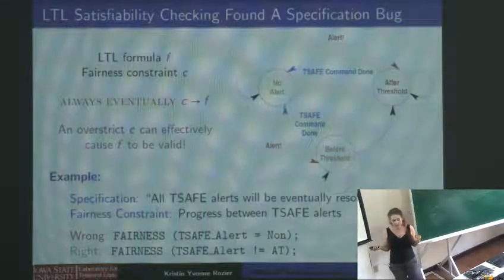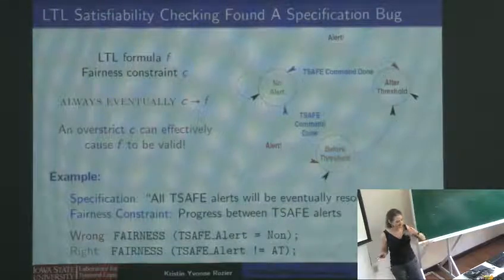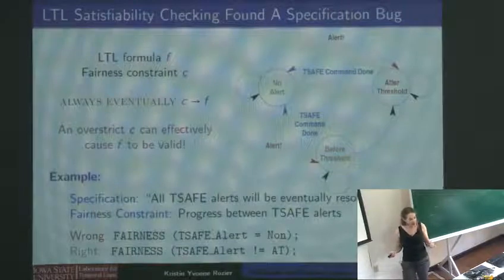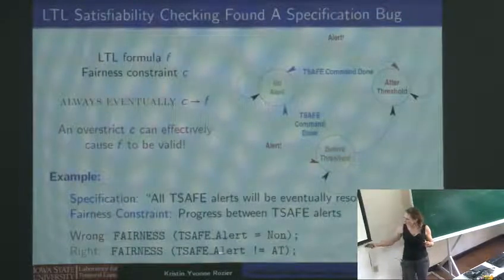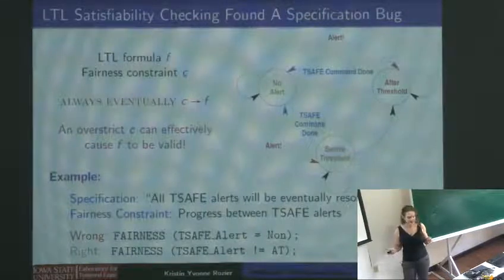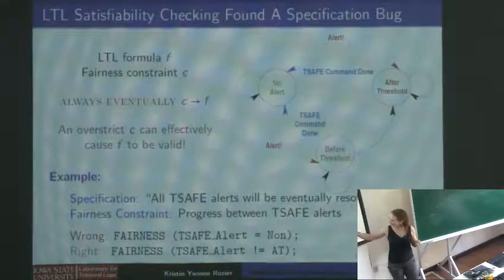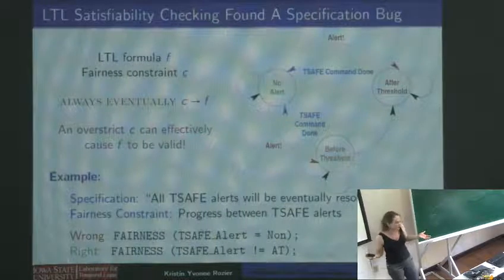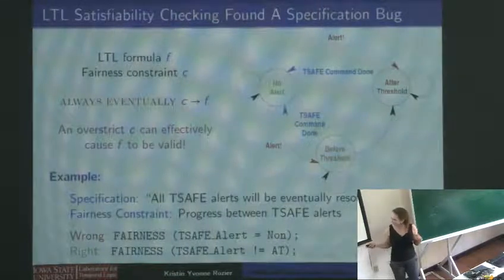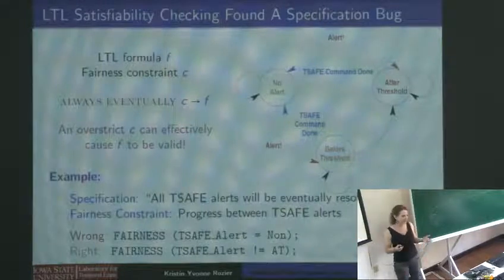Specification debugging via LTL satisfiability checking pointed out that our encoding was wrong — and it's really not obvious. We had encoded the second constraint as 'TSAFE alert must infinitely often pass through no-alert.' The actual correct encoding is just to say that infinitely often we are not in the after-threshold state. How we found this: we satisfiability-checked the whole thing, and my graduate student through lots of manual labor figured out the conflict was between these two requirements — you could have all requirements with one or all with the other, but not all requirements with both.